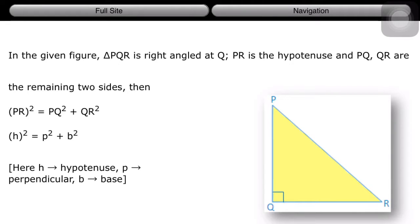So, this is Pythagoras theorem of right-angled triangles. The theorem is very simple. The square of the hypotenuse in a right-angled triangle will be equal to the sum of squares of the other two sides.